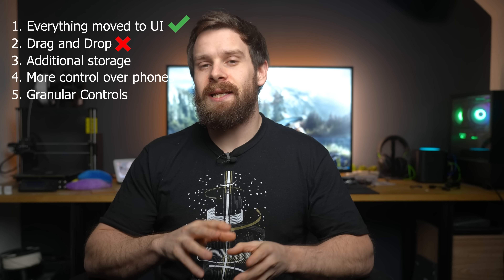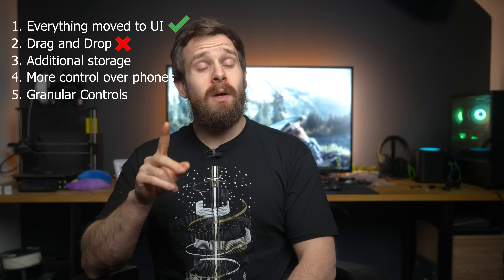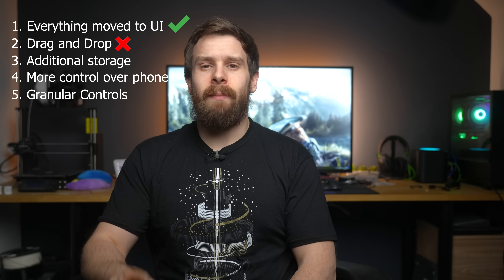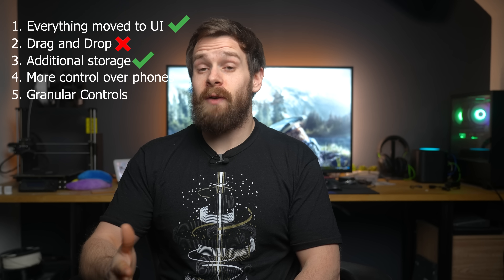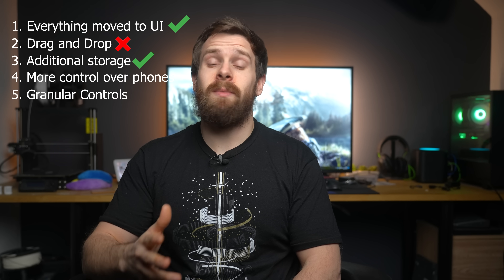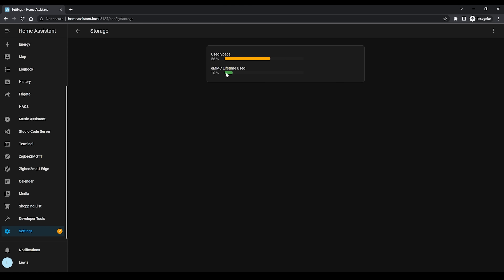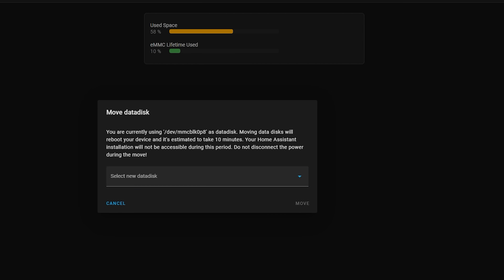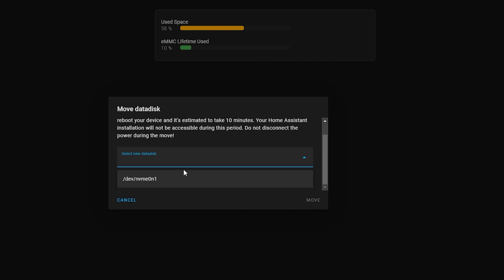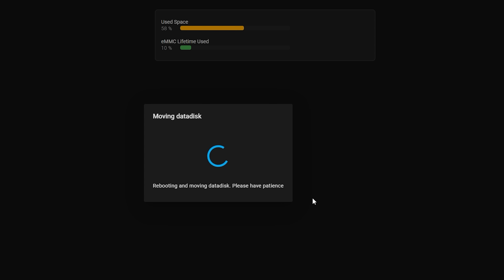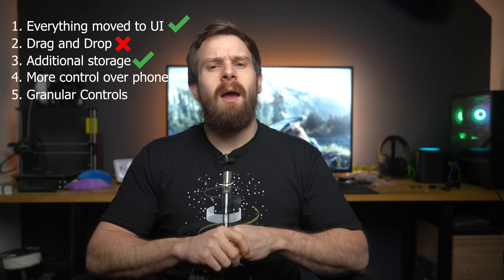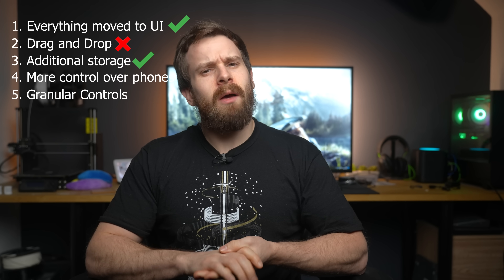Number three was being able to add a secondary data disk for media storage. That one actually did happen. You can go in and add a secondary physical drive to your Home Assistant, hit a button in the UI and it will move all of the data, including your media, over to that disk, which is cool. No network attached storage yet, which I feel really needs to happen. But I'm going to take that one as a win.